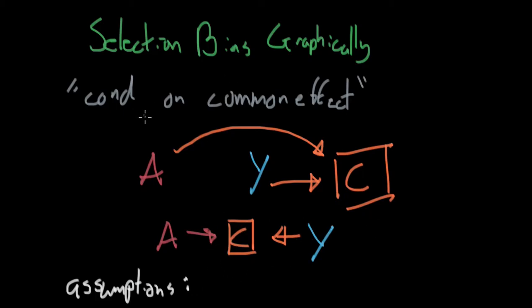But these assumptions will allow us to control for selection bias simply using standardization. So simply using standardization, the tool that we had used before. Okay. So in this case, I'm going to go ahead and show you how we can control for selection bias using standardization during the next video.